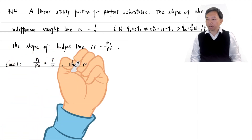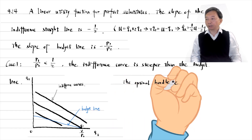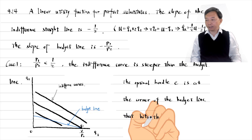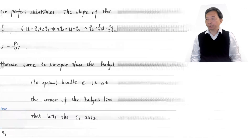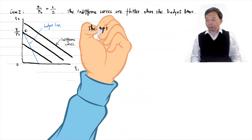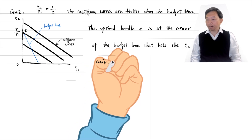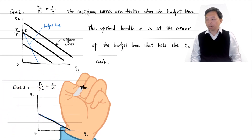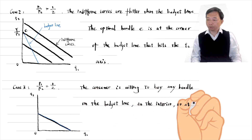In case 1, if the indifference curves are steeper than the budget line, then the optimal bundle E is at the corner of the budget line that hits the Q1 axis. By the highest indifference curve rule, the optimal bundle is on the highest indifference curve that touches the budget constraint, and the consumer spends his entire income on Q1. In case 2, if the indifference curves are flatter than the budget line, the optimal bundle E is at the corner that hits the Q2 axis, and the consumer spends all his income on Q2. In case 3, if the slope of the indifference curves equals the slope of the budget line, then the consumer is willing to buy any bundle on the budget line, in the interior or at either corner.